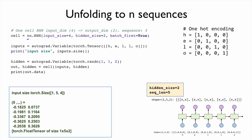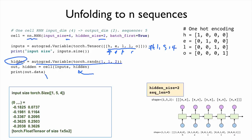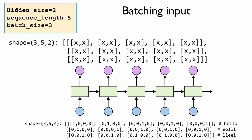Looking at the source code: we have the same RNN cell with input size 4 and hidden size 2. The only difference is we now put multiple letters — sequence 5 — so the shape of the input is [1, 5, 4]. We create the same hidden as before, pass through the cell, and the output shape is [1, 5, 2]: batch, sequence size, and output size.